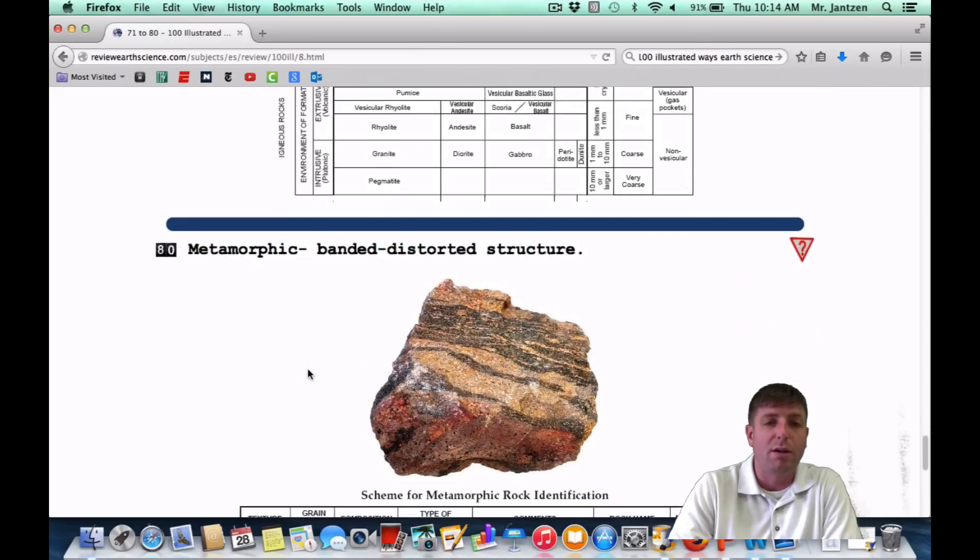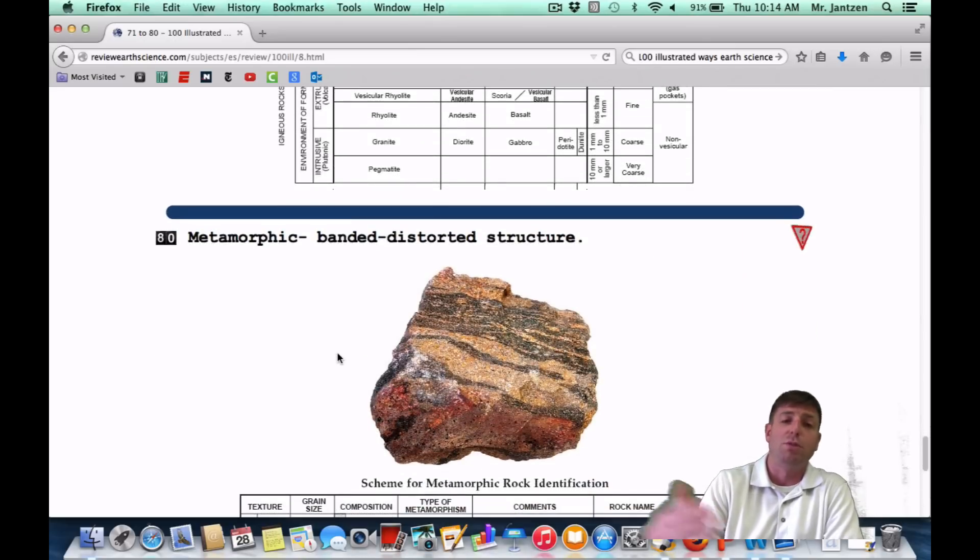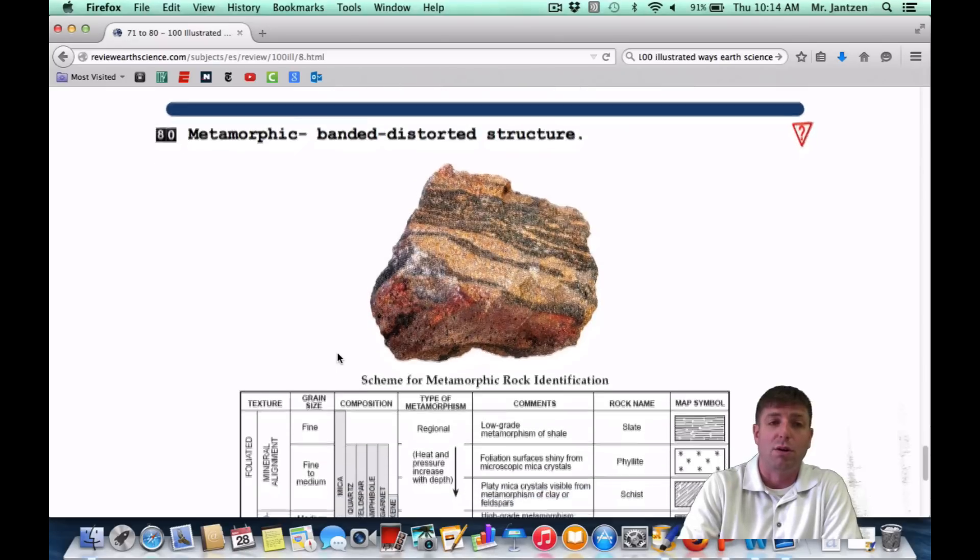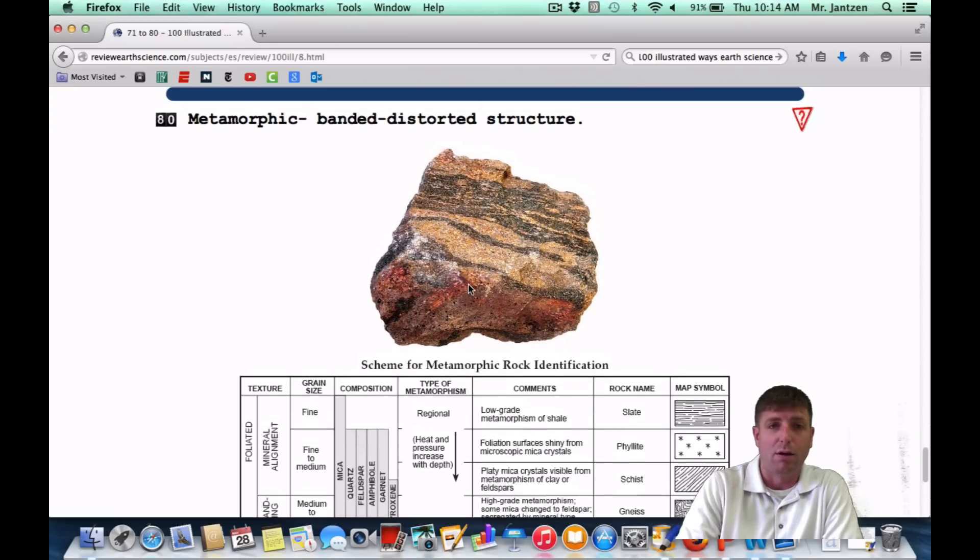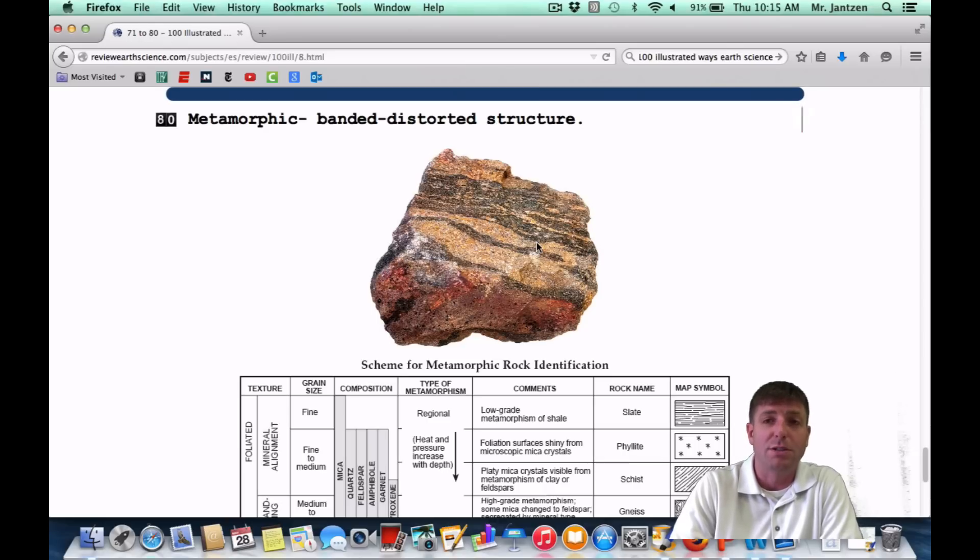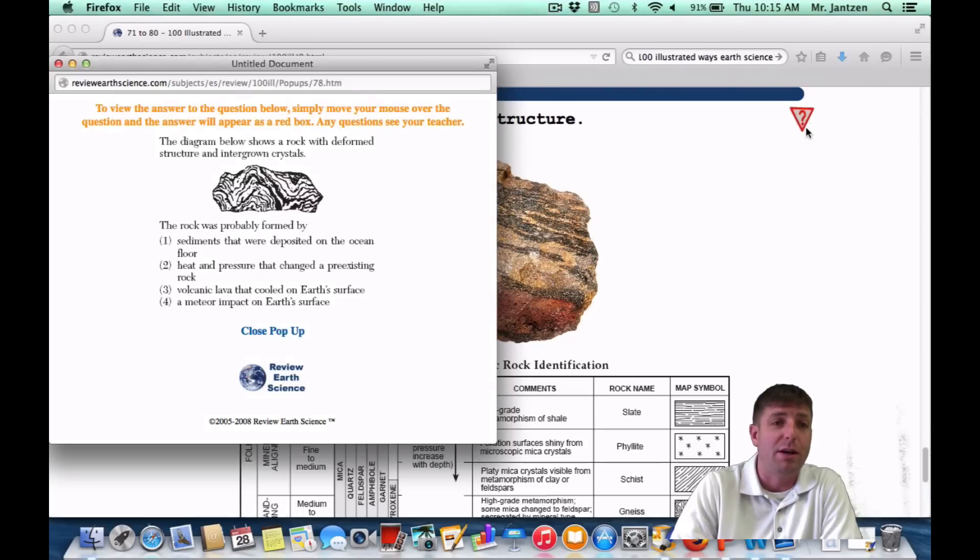Number 80, metamorphic banded distorted structure. So once again, how metamorphic rocks form, use your rock cycle chart. Here's your metamorphic rock chart. Great sample here of banding. If you get this on your lab practical, you're excited because it's very obvious banding going on here. Once again, that's caused by the heat and pressure kind of squishing the layers down. As a Regents question, it might appear like this. The diagram below shows some deformed structure of underground crystals. The rock is most probably formed by what? Metamorphic rocks are formed by heat and pressure. Anytime you see this banding right here, you've got to think of squeezing and heat and pressure.